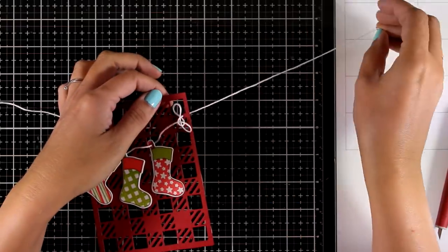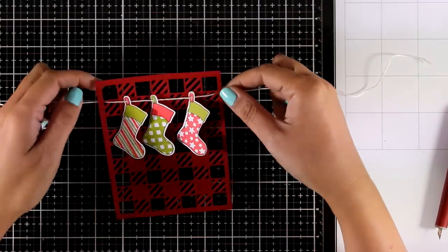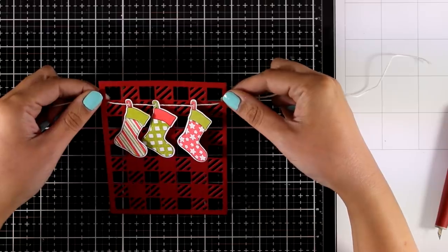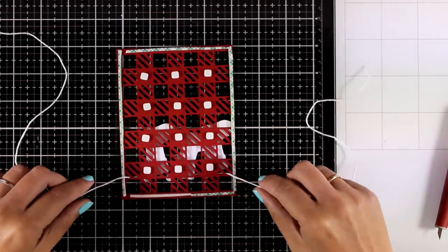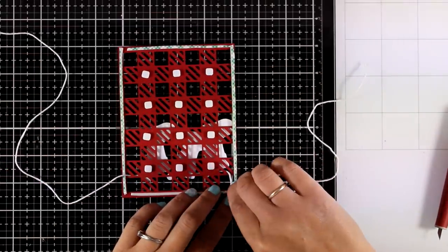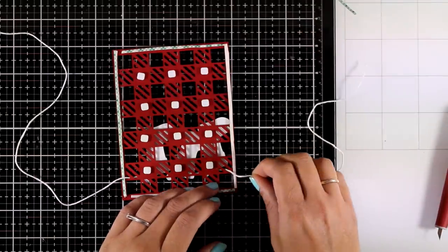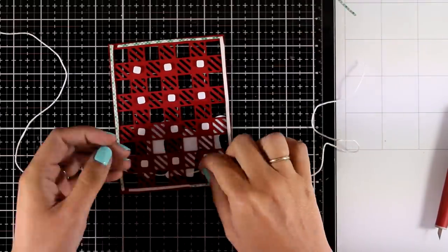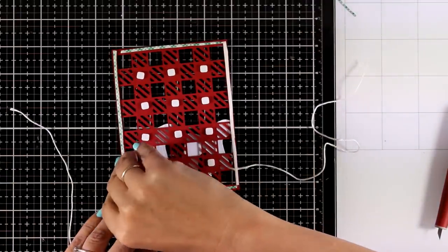You can secure the thread at the back with some tape or some glue. I do have that foam tape at the back so I'm just going to peel off the back and stick those edges there. And these are going to help that string to stay put.